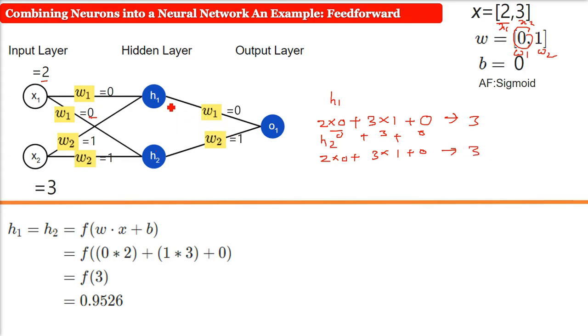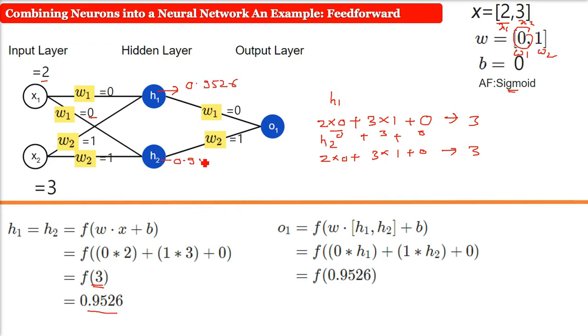Now we have to pass it through the activation function every time. Only then the neuron will get activated at a certain value. So we are passing it through the sigmoid function. We get a value of 0.9526. This 0.9526 is coming from here. This is giving you a value of 0.9526. This is also giving you a value of 0.9526. So this is for H1, this is for H2.